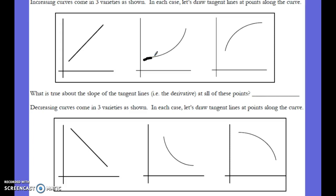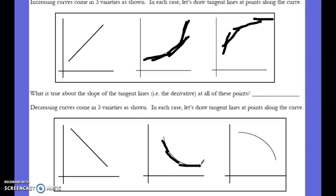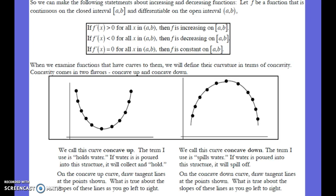Increasing curves give us three types: constant, positive and increasing (the slope gets steeper as you go right), and positive but decreasing (the slope flattens as you go left to right). Same for negative slopes: negative and getting flatter, and negative and getting steeper. To sum up: if the first derivative is greater than zero, the function is increasing; less than zero, it's decreasing; zero, it's constant.